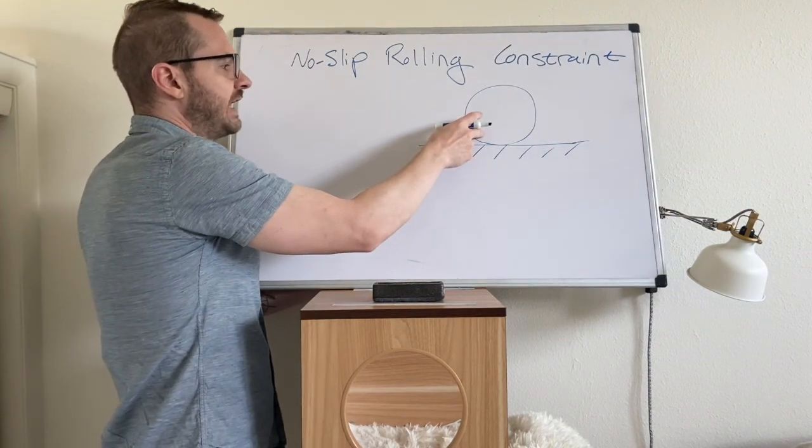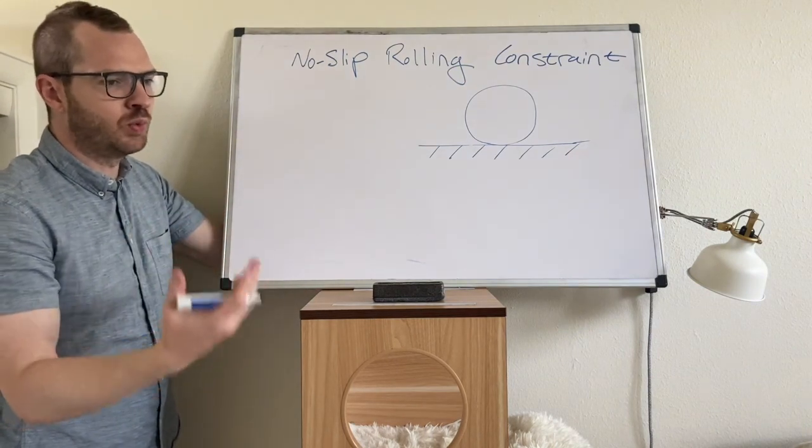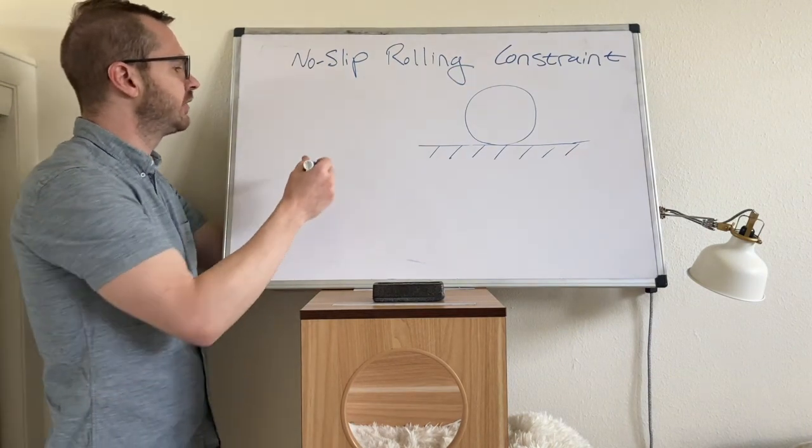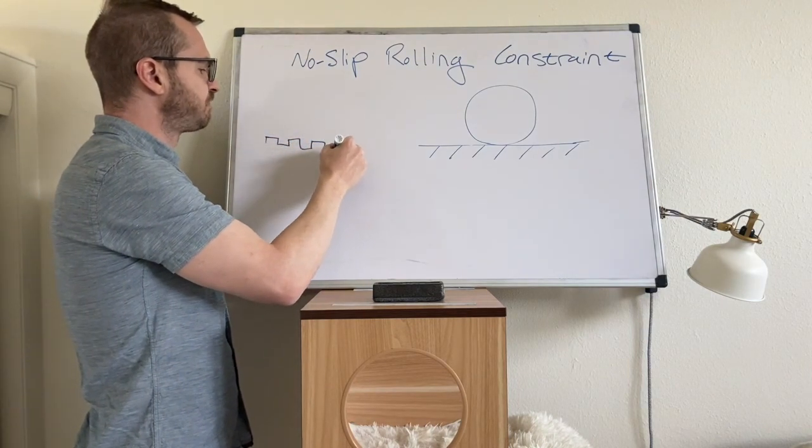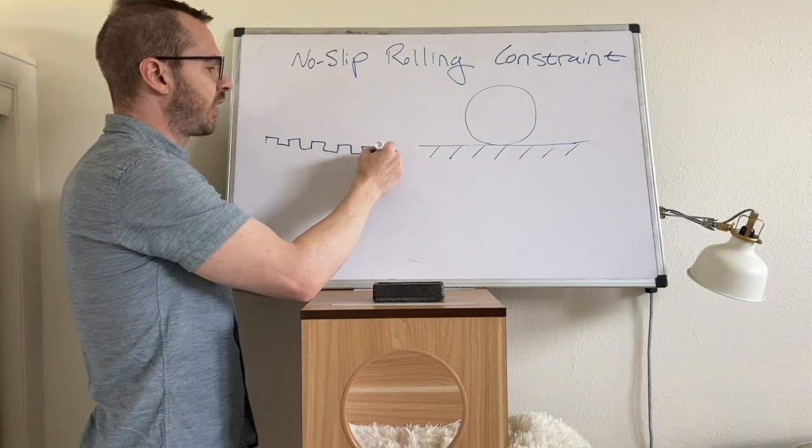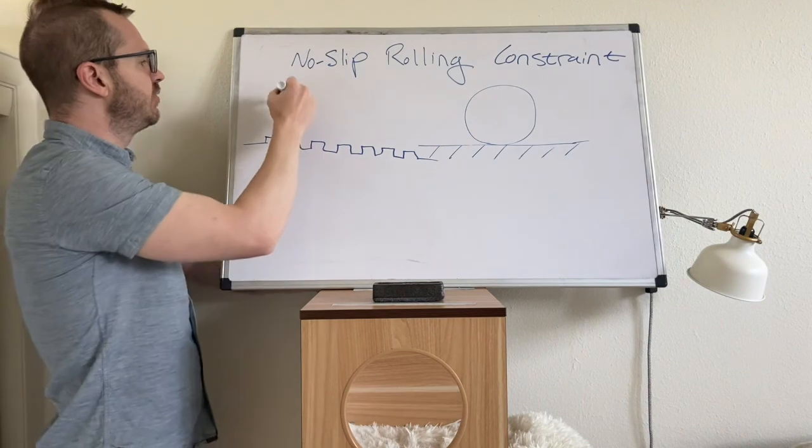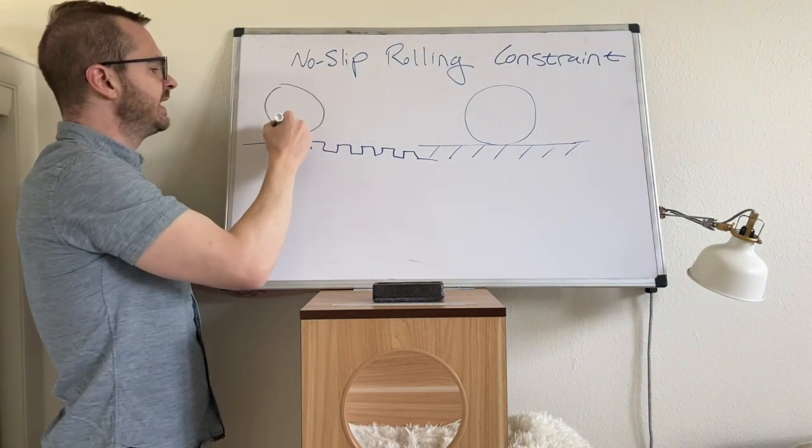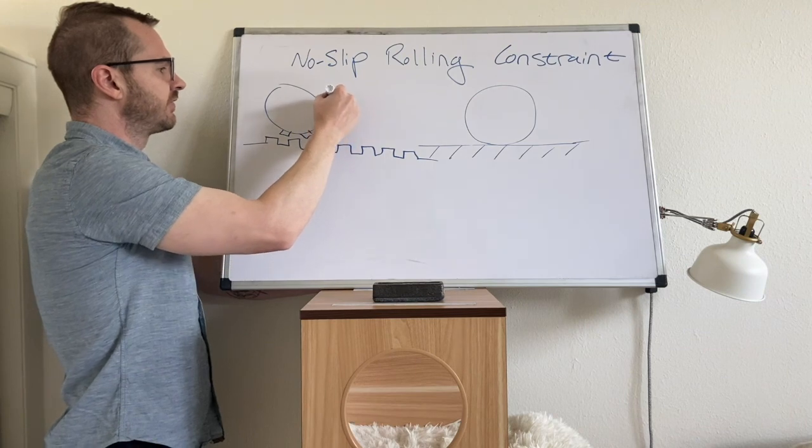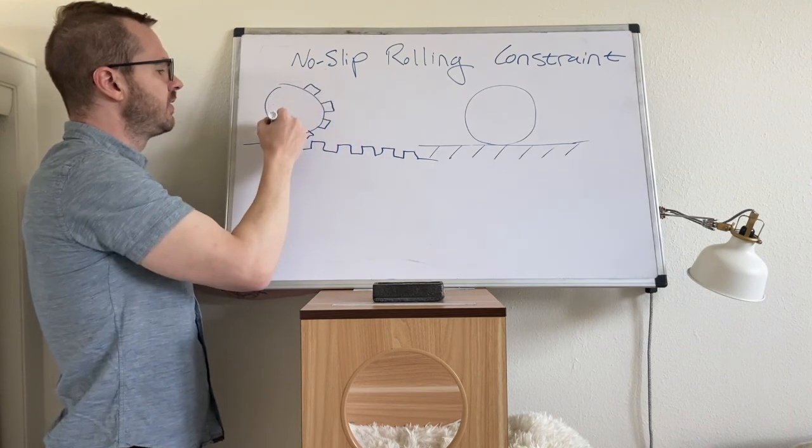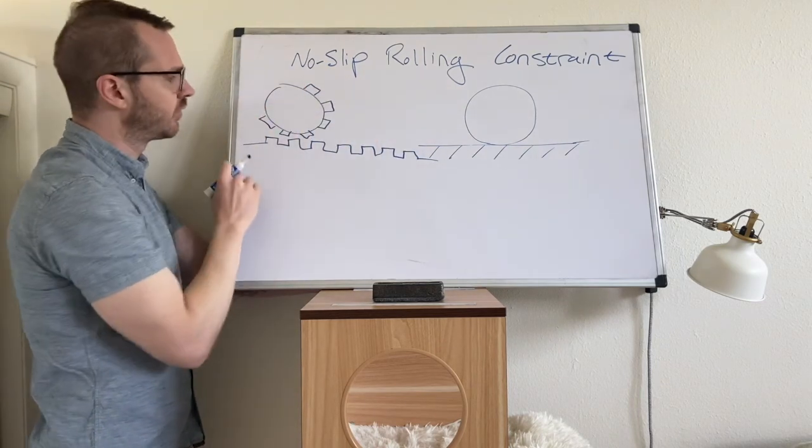What are some other cases, though, where we can use this same constraint? It doesn't have to be a wheel or a disc. It could also be what's called a rack and pinion, which is if the ground has teeth on it, and then you have a gear that is rolling along the surface. So as this gear spins, it's also going to translate horizontally.